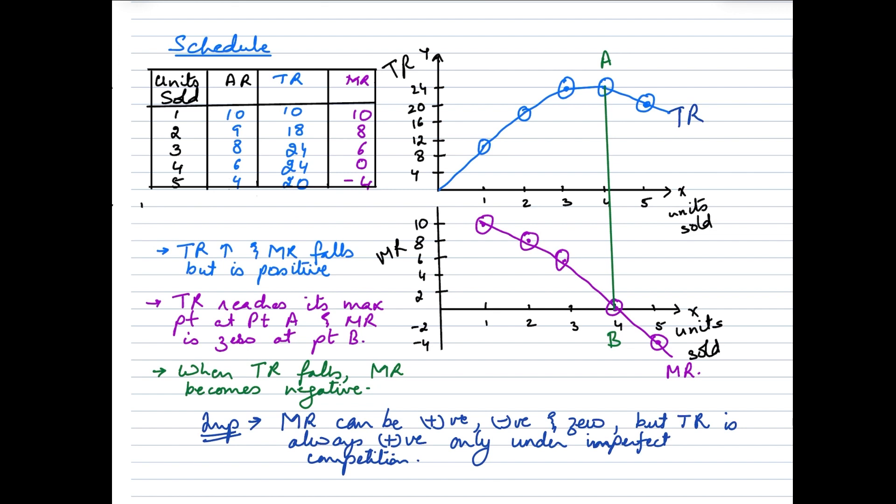One important thing that you need to note here is that marginal revenue can take all the three values, that is it can be positive, negative, or zero. However, total revenue would always be positive. Marginal revenue will be able to take these numbers and these values only under imperfectly competitive markets. If we remember, under perfectly competitive markets, marginal revenue is a horizontal parallel line to the x-axis.